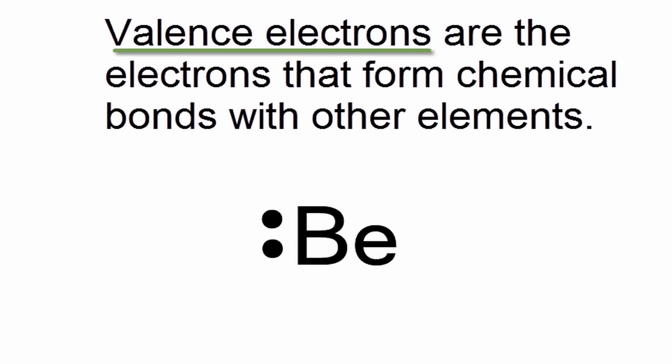Beryllium, which is in group 2 or 2A, has two valence electrons, so we'll take those two valence electrons and put them next to the element symbol Be for beryllium.